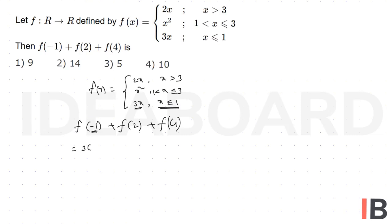That equals 3 times -1, which is -3. For f(2), since 2 lies between 1 and 3, the defined function is x², which is 2² = 4. For f(4), since 4 is greater than 3, the defined function is 2x, which is 2 times 4 = 8.